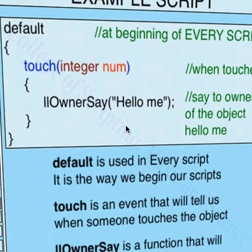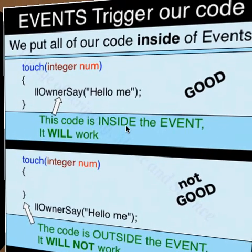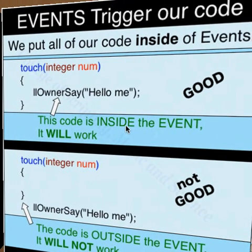The touch event will trigger our code when someone touches this object. Notice that this event forms another script sandwich, with its own open and closed brackets. In between these brackets is our function. The owner say function will send a message only to the person who owns this object.